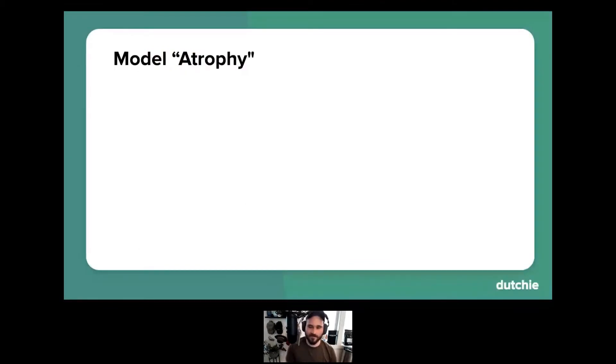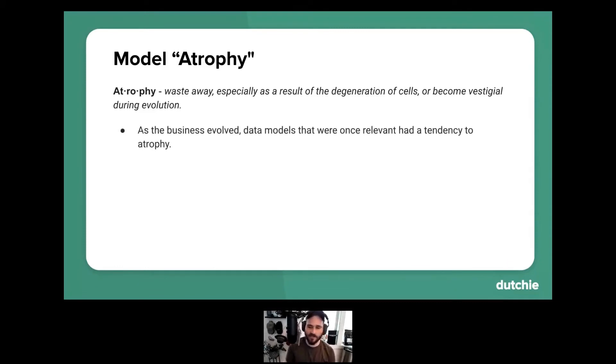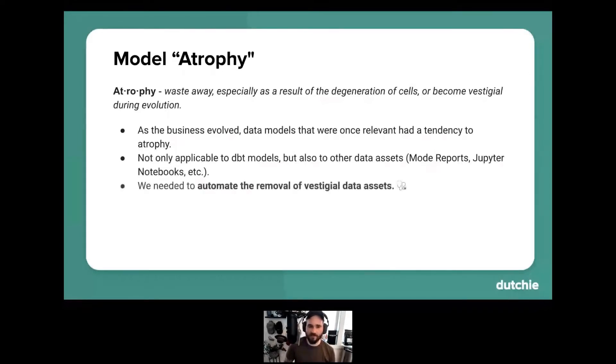So there's a term that we like to use for this that some of you may have heard me say elsewhere, called model atrophy. For those of you unfamiliar with what atrophy is, it's essentially the process of something deteriorating due to a lack of use. And in our case, we noticed that a lot of our DBT models had at some point in time effectively just become vestigial to us. In other words, models that were once very relevant to the company, over time became less and less relevant to us. And what we noticed was not only was this applicable to DBT models, but it also applied to other data assets as well, such as mode reports, Jupyter notebooks, et cetera. And we knew that manually curating all of these data assets was going to be quite a Herculean effort for us. So we wanted to see if there was a way that we could effectively automate the removal of all of these vestigial data assets.